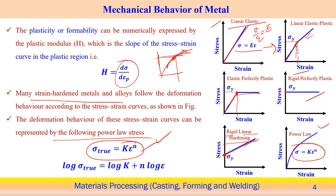If you take the logarithm of both sides, we can say: log(true stress) = log(k) + n × log(epsilon). On the logarithm scale, this is equivalent to y = c + m×x — a straight line. So y is equivalent to the logarithm of true stress value, c is the intercept, m is the slope, and x is the logarithm of epsilon. The power law on the logarithm scale behaves linearly. If you represent the data points on x and y axes and convert to the logarithm scale and plot, the stress versus strain behaves in a linear way. This way we can analyze the different stress-strain behavior of different types of material.